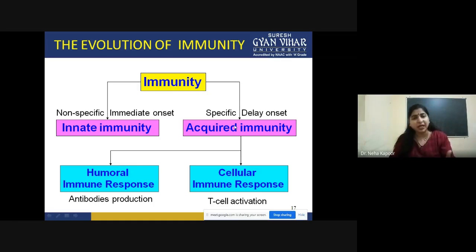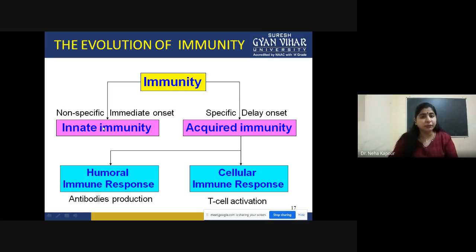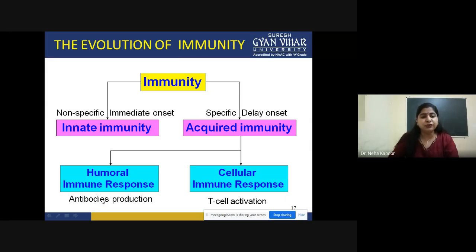In case of acquired immunity, the development process takes time, which is why its onset is delayed. In innate immunity, the response is immediate since no prior encounter is needed. Acquired immunity has two types of immune responses: humoral and cellular. Humoral immune response is mediated by B cells, which produce antibodies against a particular antigen. Cellular immune response involves T cell activation, in which cytotoxic T cells and helper T cells play the role.